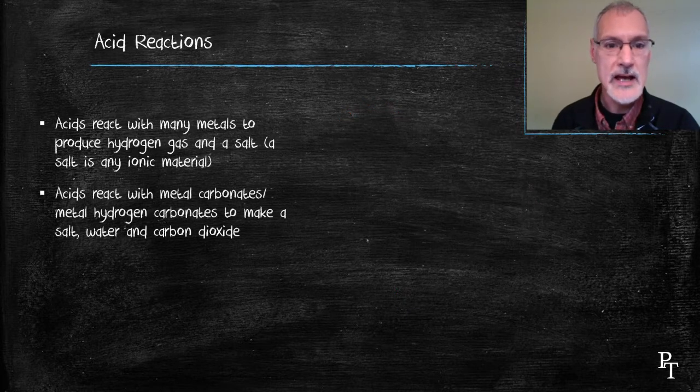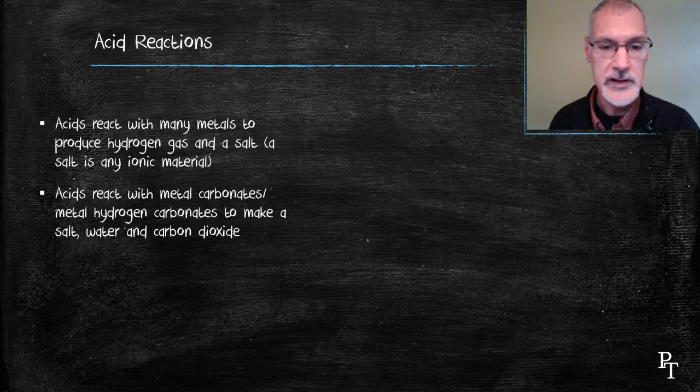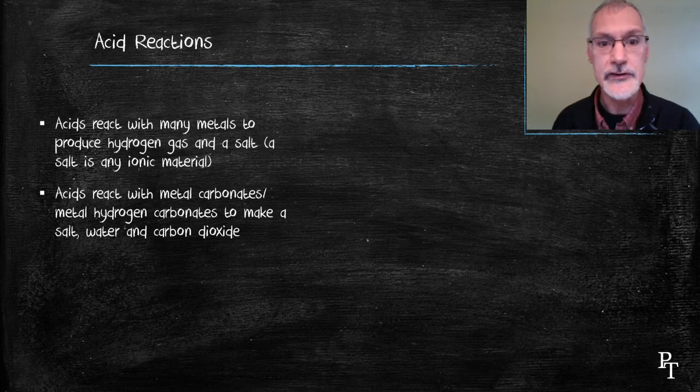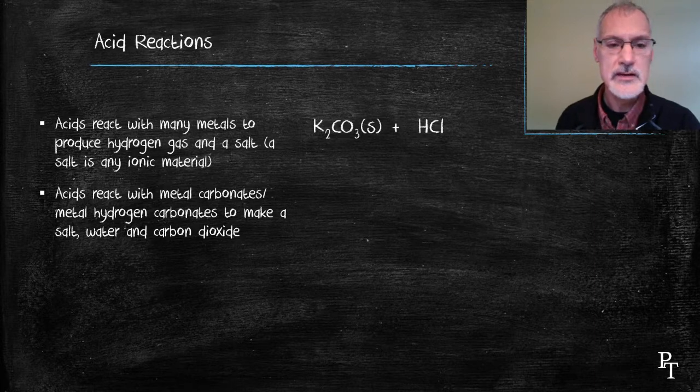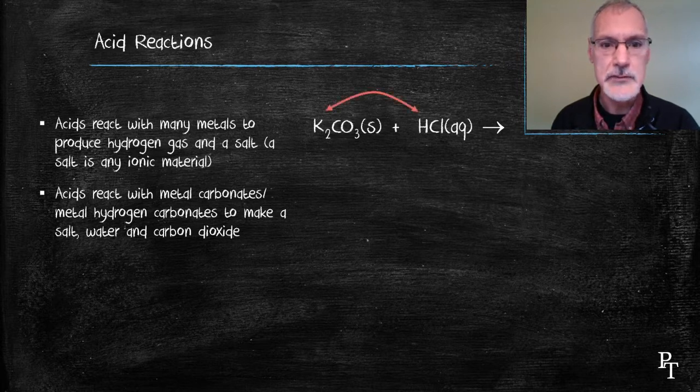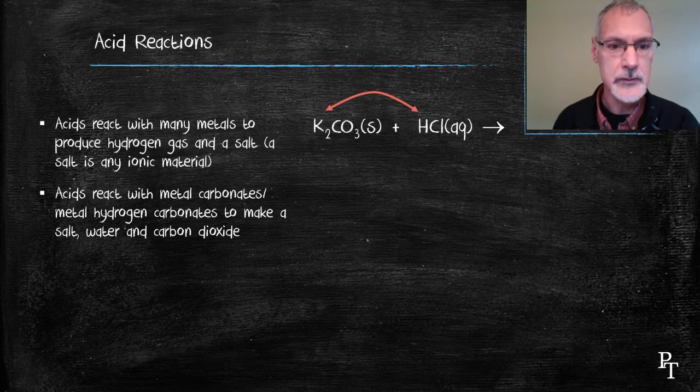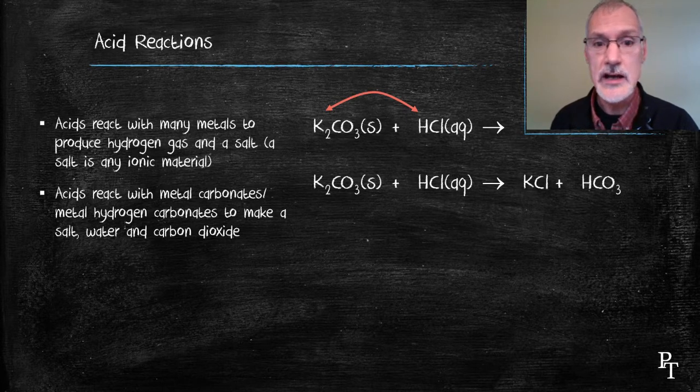Let's take a look now at what happens with an acid and a metal carbonate or a metal hydrogen carbonate. In this case, you produce a salt, carbon dioxide and water. The example I'm going to use is potassium carbonate and hydrochloric acid. Again, the metal and the hydrogen will undergo a displacement, switching partners. So, now the potassium will be with the chlorine and the hydrogen with the carbonate.